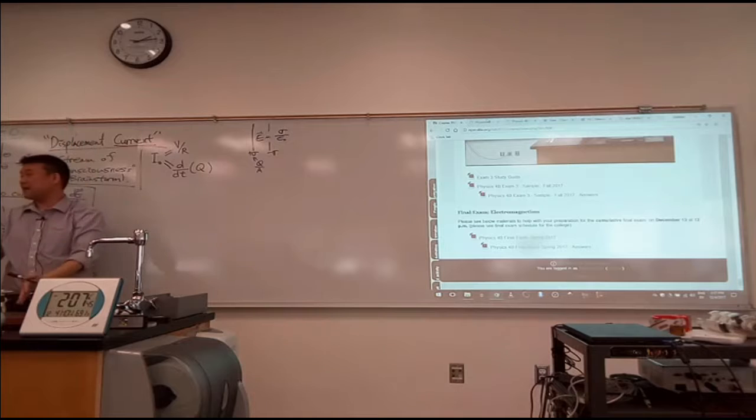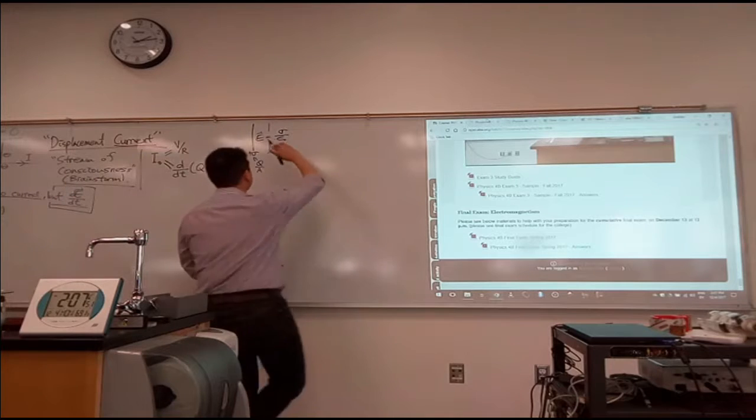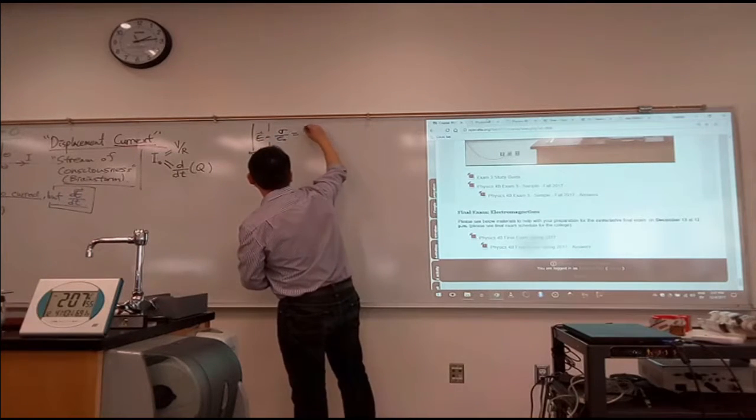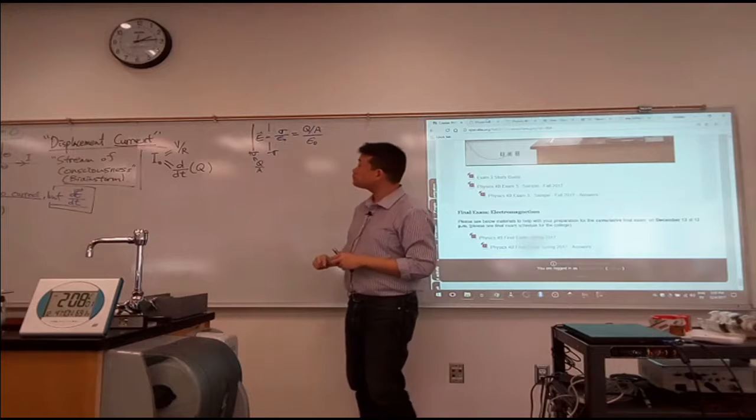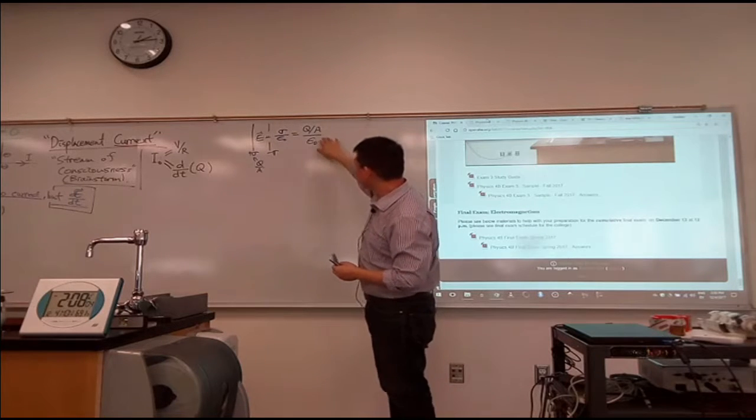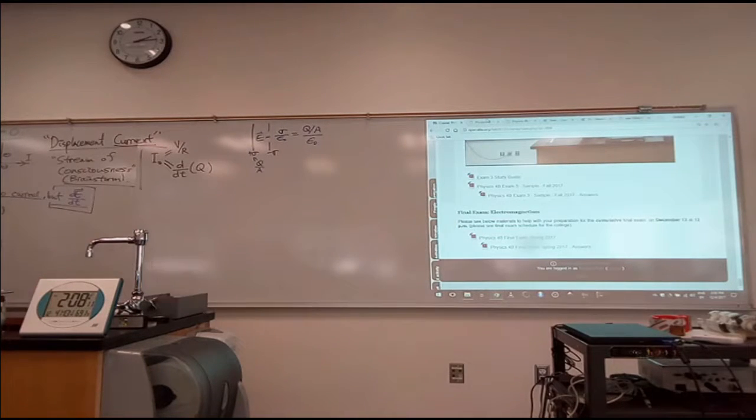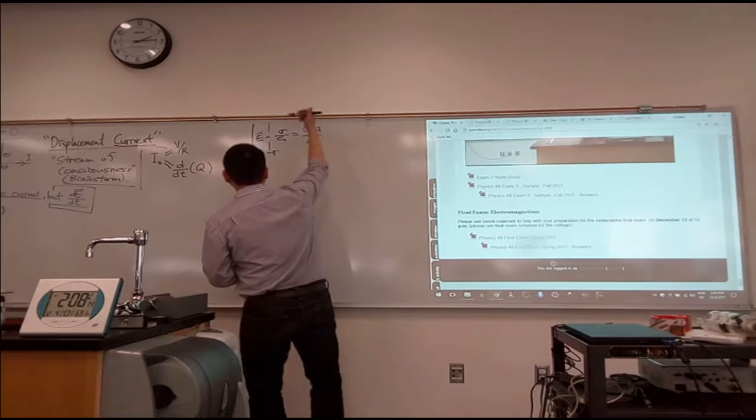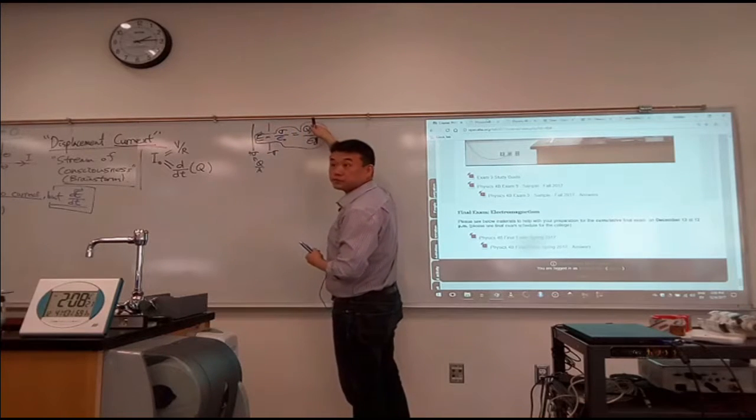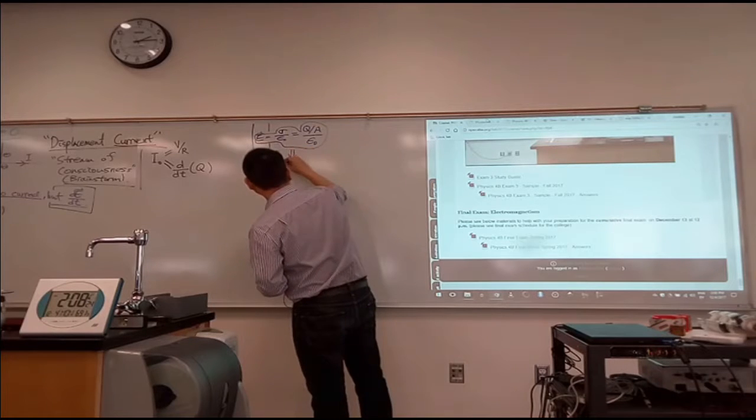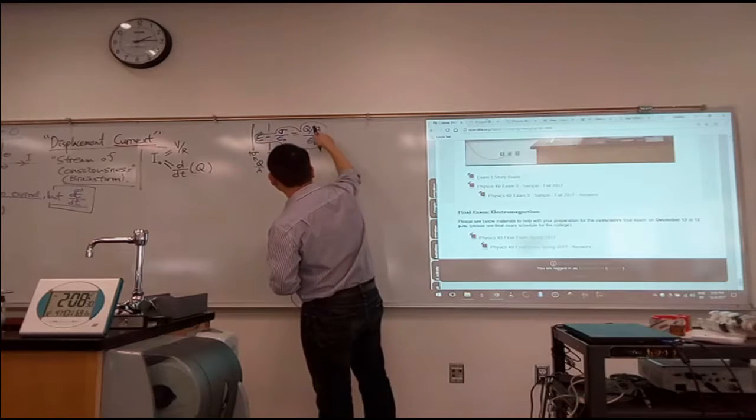We started out by saying it's an infinite plate capacitor. But in a real capacitor, it's going to have some finite area A. So let me rewrite this electric field as q over A over epsilon naught. All right, it seems like I can actually rewrite this. So let me rewrite it this way. I'm going to take this expression, electric field magnitude is equal to this right-hand side, and solve this for q. I can say q is equal to area times epsilon naught times E.